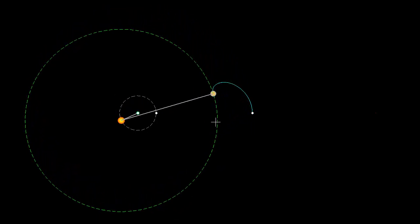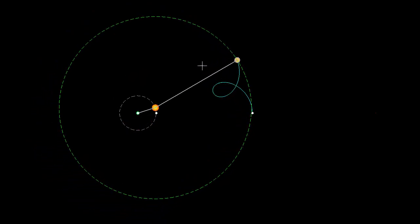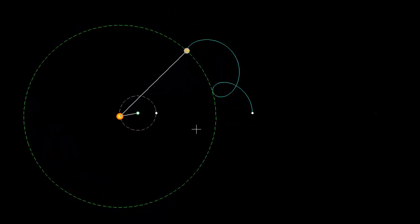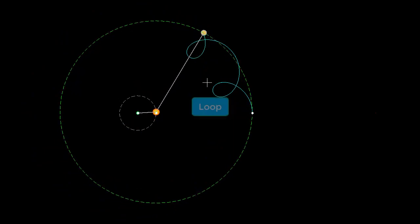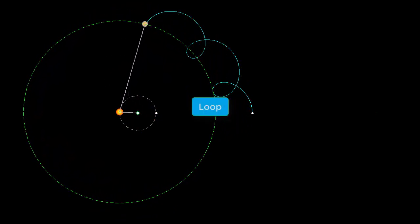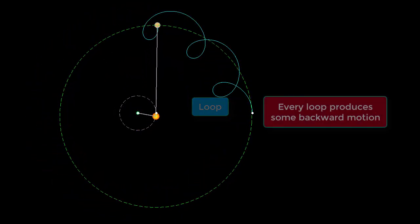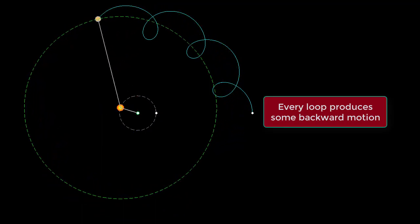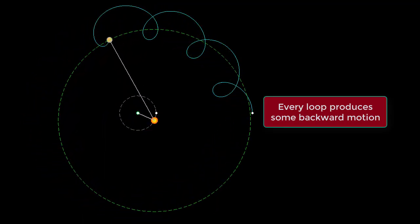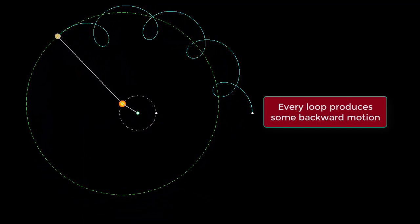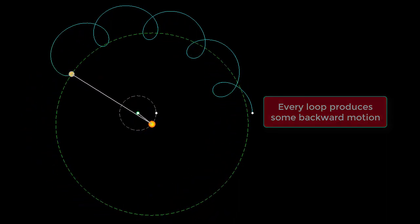So, here is the motion again, but you can see now the path of Jupiter is getting plotted. And you will notice this path has a loop. In fact, it will be having multiple loops like this. Whenever there is a loop in a path, then the body has to come backward and then resume its forward motion. That is what Jupiter is doing here.